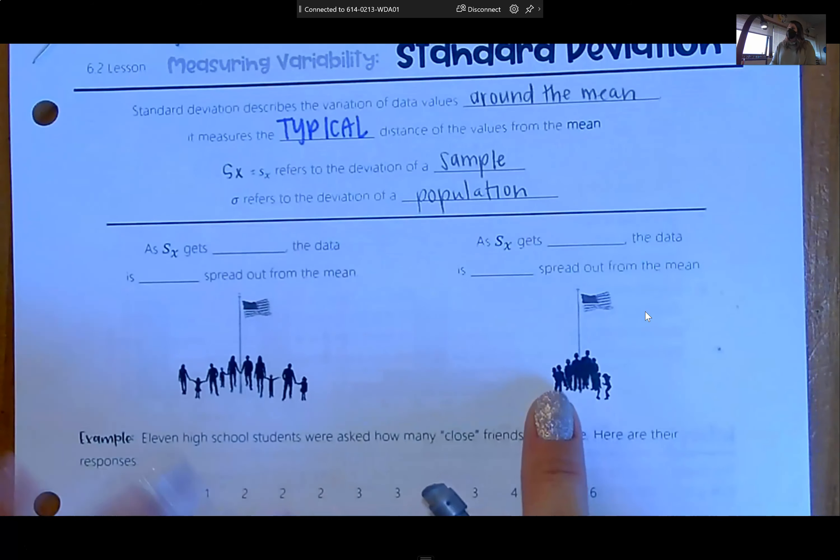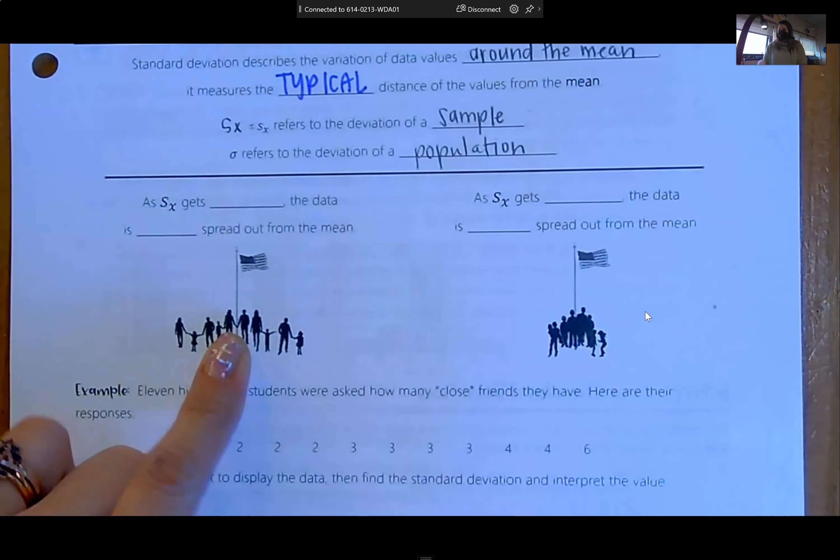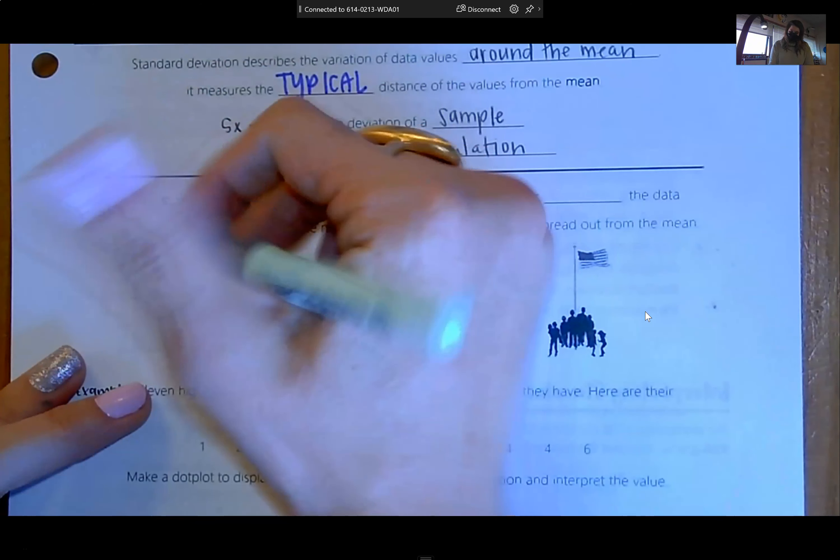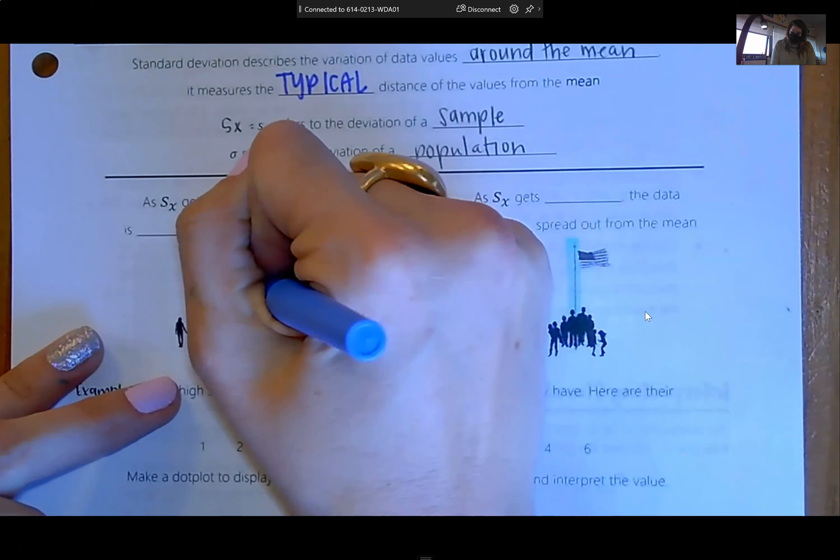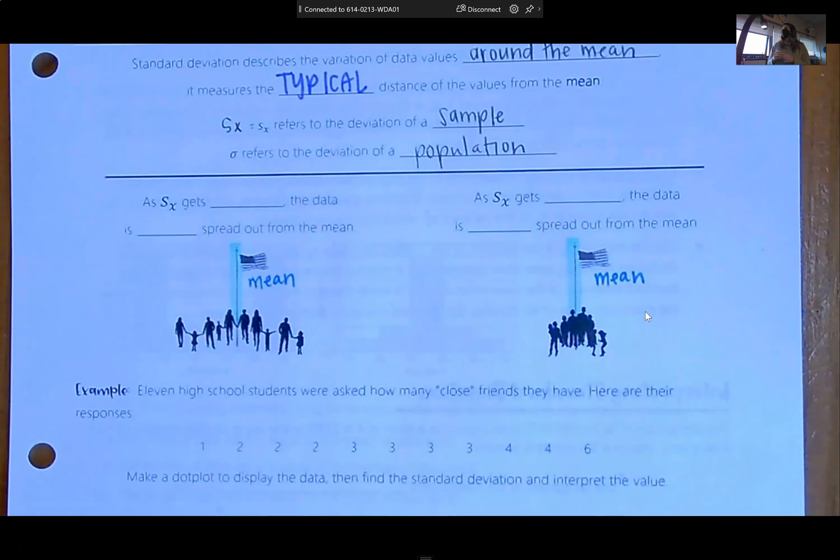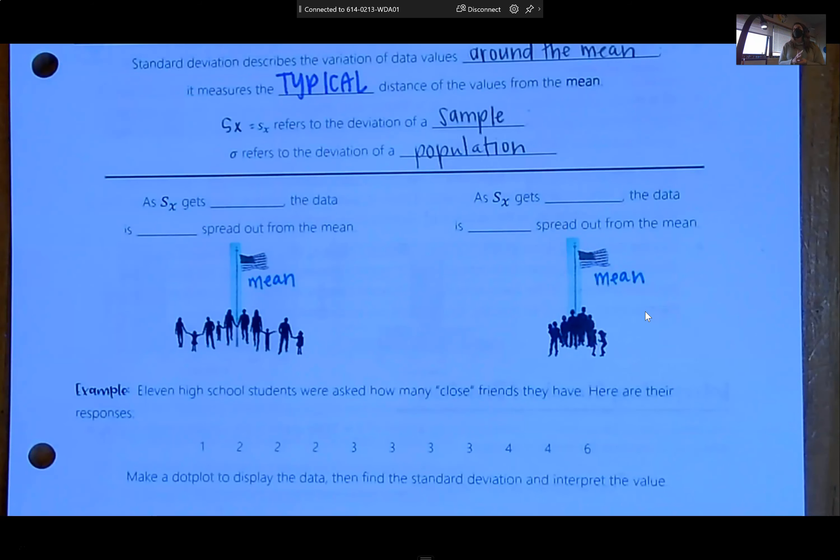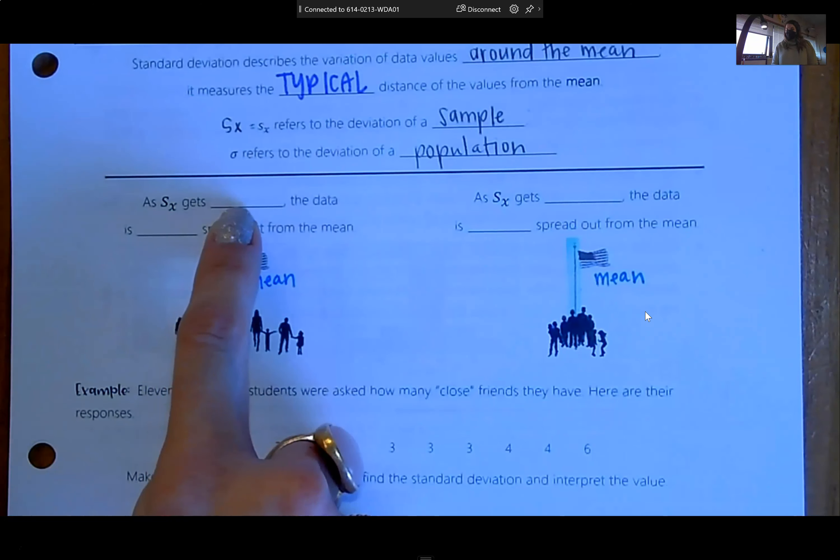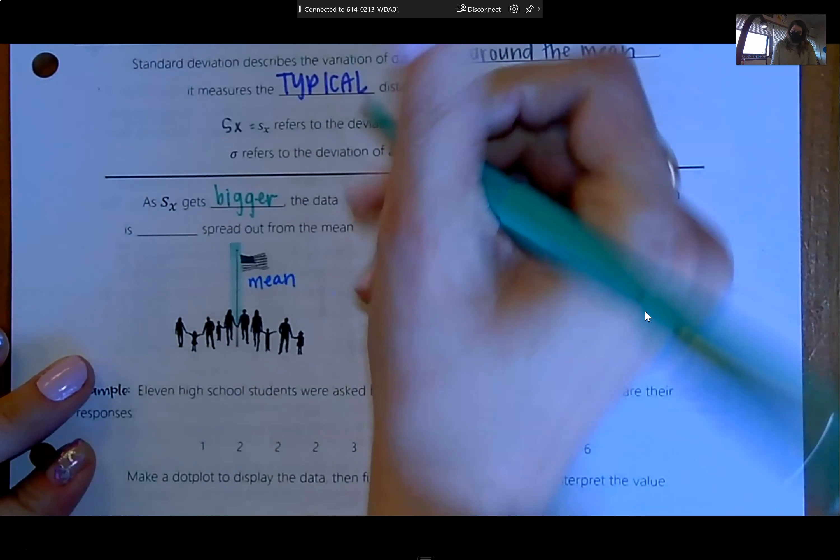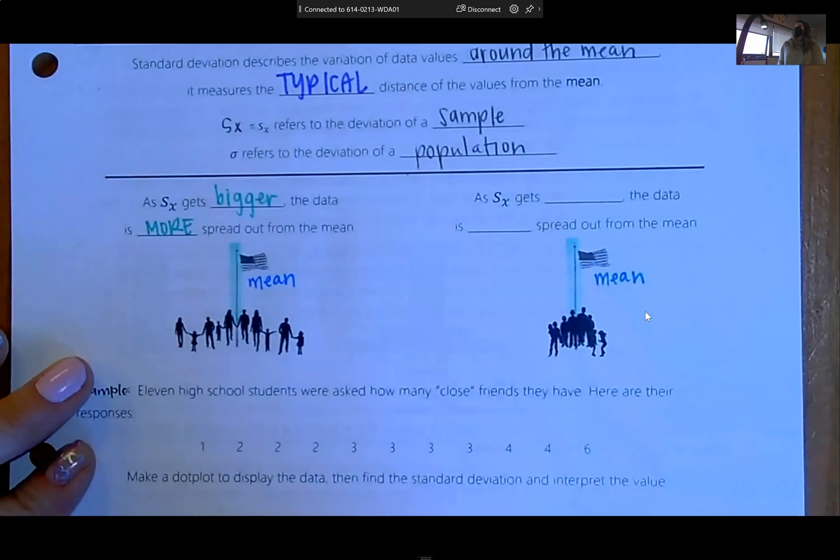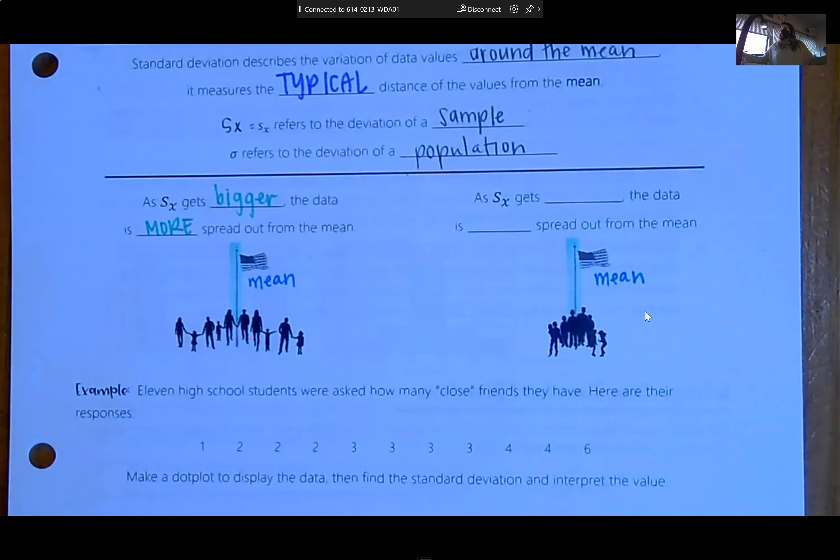So down here is a visual of standard deviation. In both of these cases, the flagpole represents the mean. It is in the center of the crowd because if you have a good data set, your mean and your median are approximately the same, which means your mean is at the center of your data. This left-hand side is a visual representation of a data set that has a larger standard deviation.